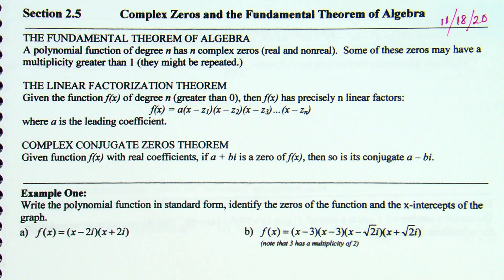A couple of review items. Fundamental theorem of algebra — you've seen this before. A polynomial function of degree n has n complex zeros, real and nonreal. Some of these zeros may have a multiplicity greater than one — they might be repeated. The variation we often talk about is that a function has at most n zeros. What this variation is saying is it has exactly n zeros. If you include real and nonreal — the imaginary numbers — they're expressed in that complex form of a plus bi. When you include all the real and nonreal zeros, it will always be exactly n, where n is your highest power.